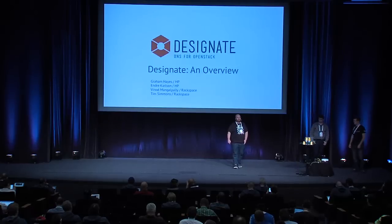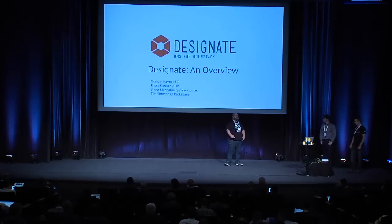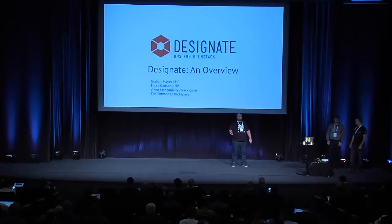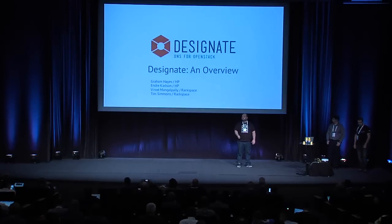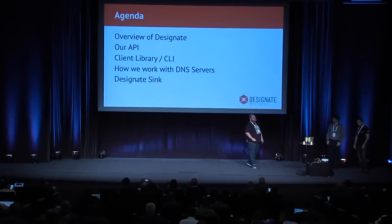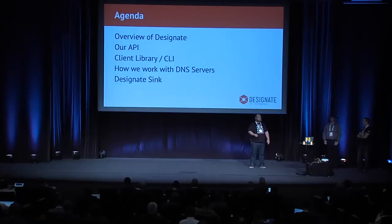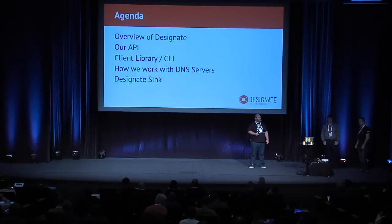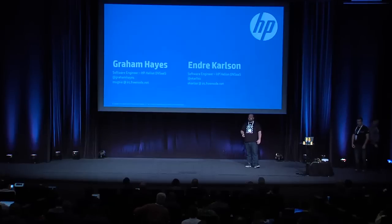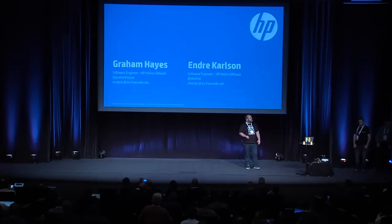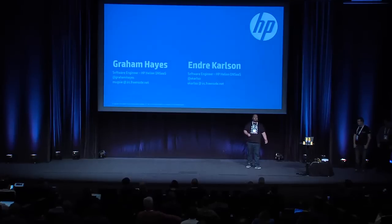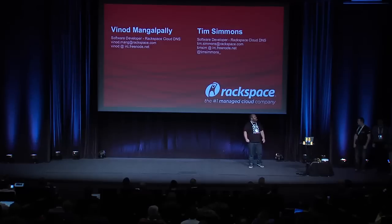Welcome to the Designate overview talk. We'll be running through Designate and how it can be used in your clouds to improve customers' use of DNS. We'll be covering what DNS is, how you can interact with it using the API or client libraries, how we work with DNS servers, and how you can use notifications to auto-create domains and records as people create resources on your cloud. My name is Graham Hayes, a software engineer on the DNS as a service team at HP Helion. On my left is Andre Carlson, a colleague of mine. We also have Vinod Mangapalli and Tim Simmons, software developers in Rackspace's Cloud DNS team.